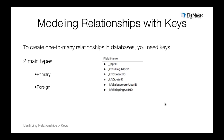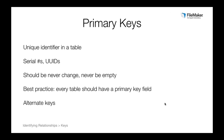Now that you have your entities, attributes, and relationships figured out, the next step is to implement those in a database application. To implement relationships, you need keys. There are two main types: primary keys and foreign keys. A primary key is a field in a table that uniquely identifies that record. In FileMaker, the two main ways to make a primary key are serial numbers and UUIDs. Primary keys should never change once a record is made, and they should never be empty. Best practice: put a primary key in every table — it really helps for troubleshooting.